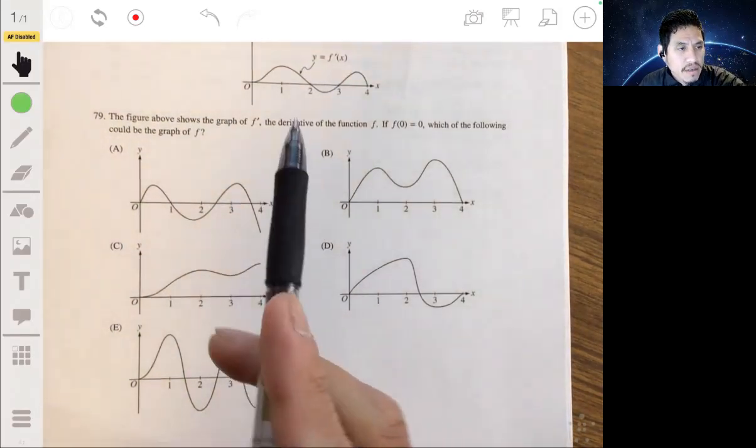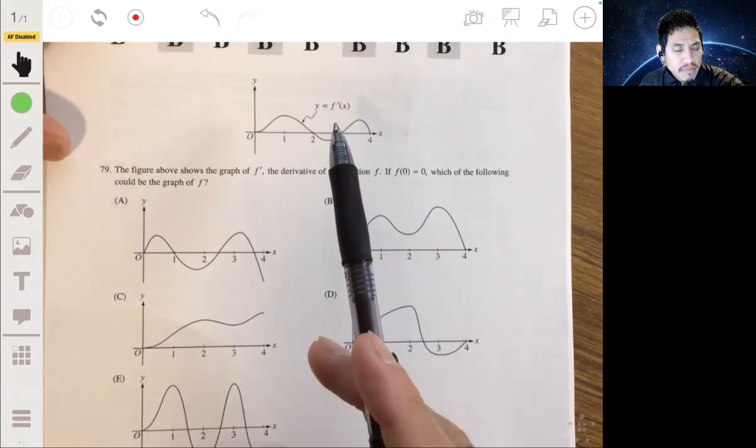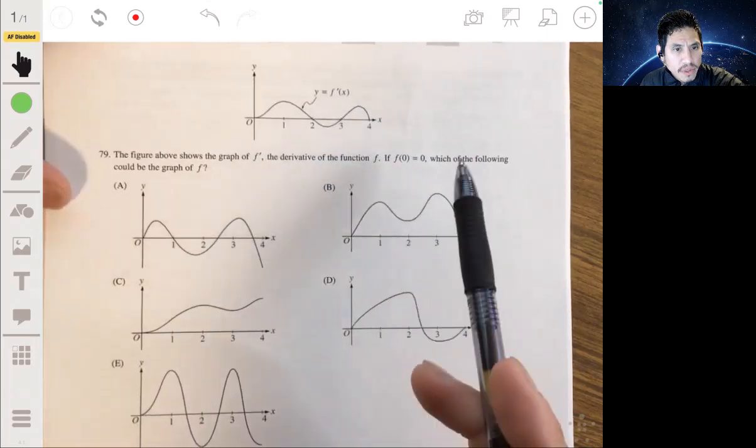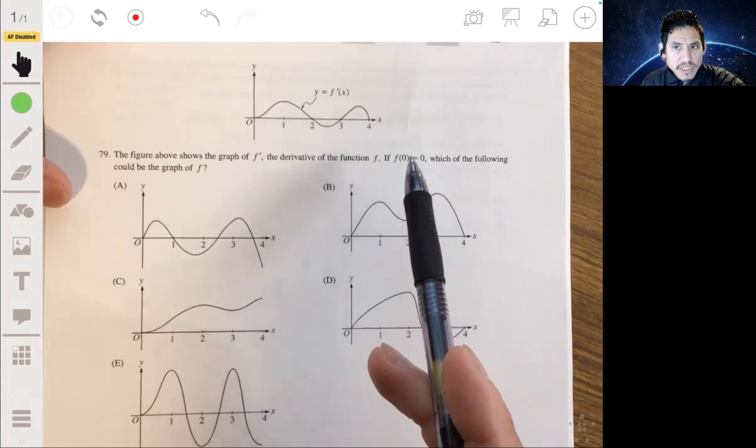Let's look at problem 79. This figure shows the graph of f prime. We need to figure out which one of these is the graph of f, and we're given that f of 0 equals 0.